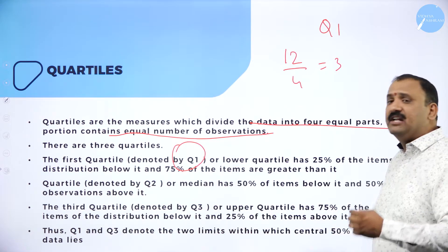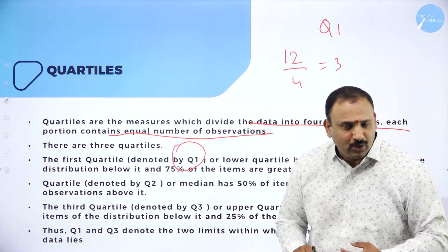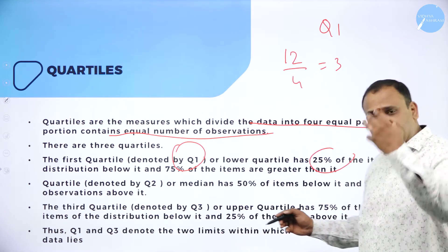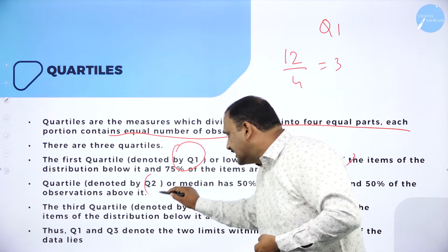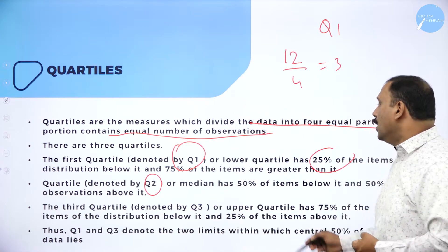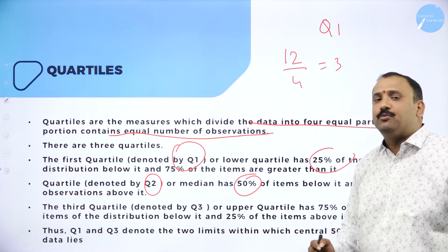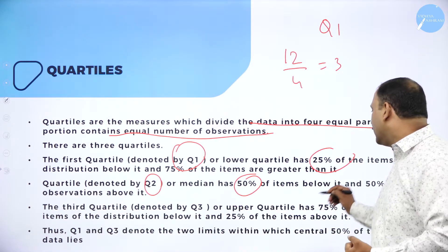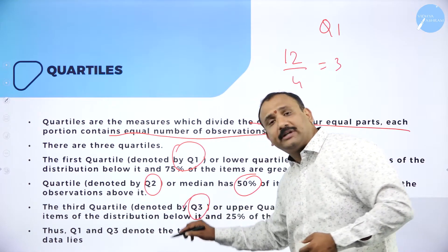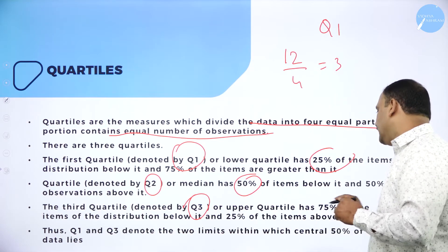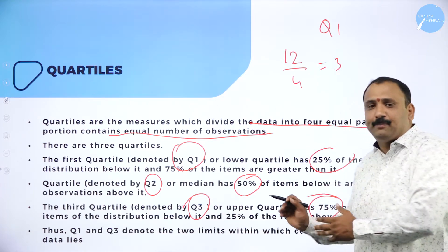Q1 is the lower quartile — 25% of the distribution falls below it and 75% of items are greater than Q1. Q2, the second quartile, is the median: 50% of items fall below it and 50% above. Q3, the third quartile, has 75% of items below it in the distribution and 25% on the other side.